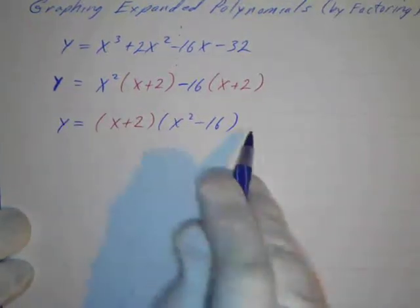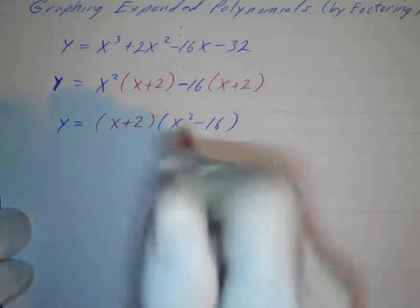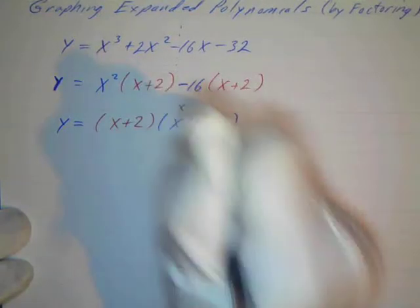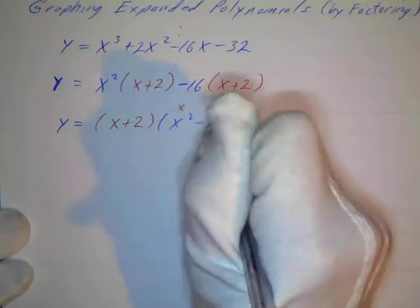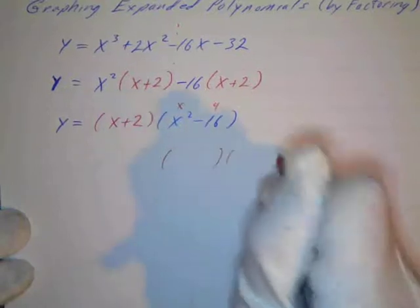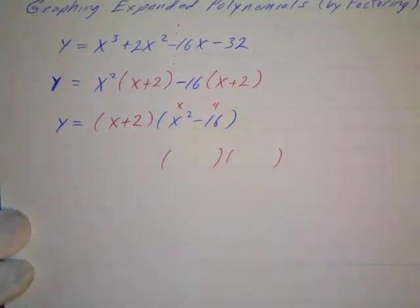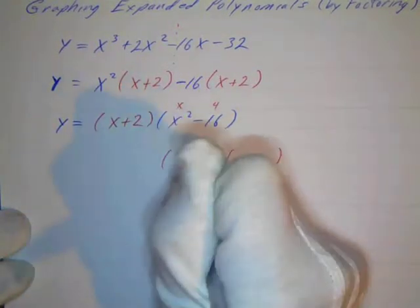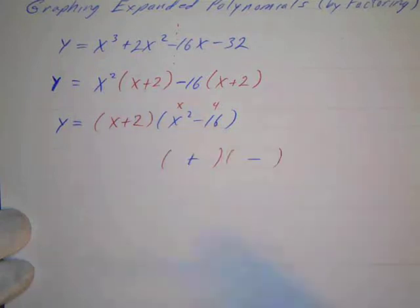But I can also factor this because this looks like the difference of perfect squares. What's the square root of x squared? x. What's the square root of 16? 4. So I've got the difference of perfect squares, so I know that this is going to factor to be the product of the sum and the difference of these little numbers, the sum and the difference of x and 4.